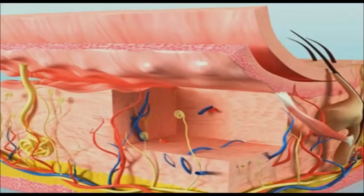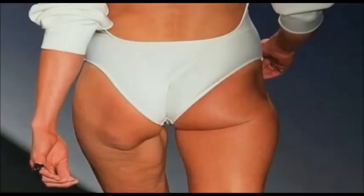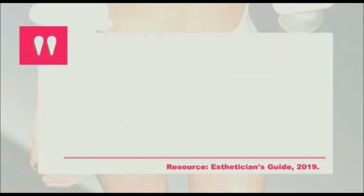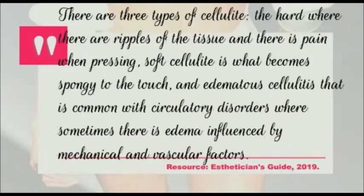There are three types of cellulite. Hard cellulite, where there are ripples of the tissue and there is pain when pressing. Soft cellulite, which becomes spongy to the touch. And edematous cellulite, which is common with circulatory disorders, sometimes influenced by mechanical and vascular factors.